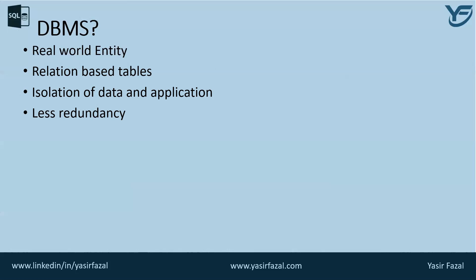Then there is less redundancy. DBMS follows the rules of normalization — first NF, second NF, third NF — which splits a relation when any of its attributes has redundancy in values. Normalization is a mathematical and scientific process that reduces data redundancy.